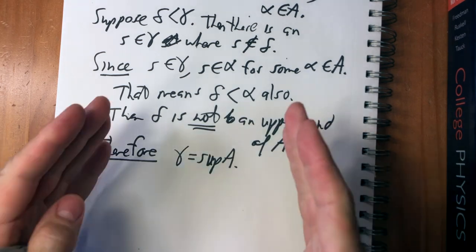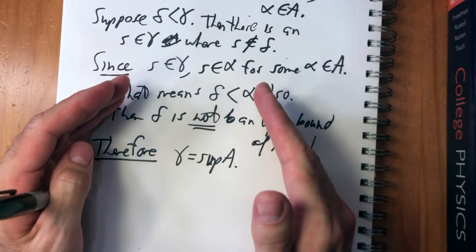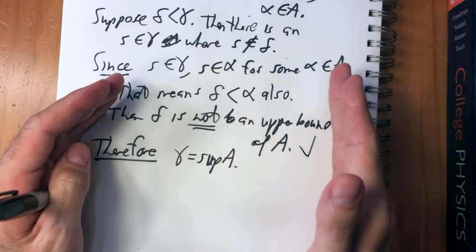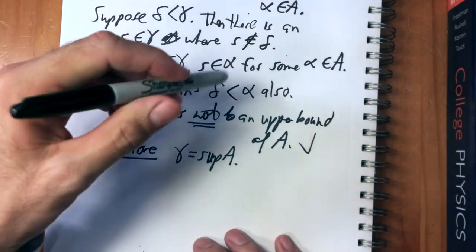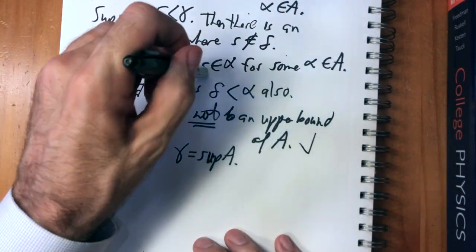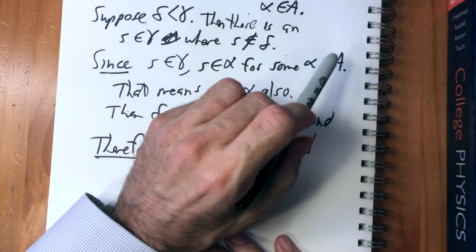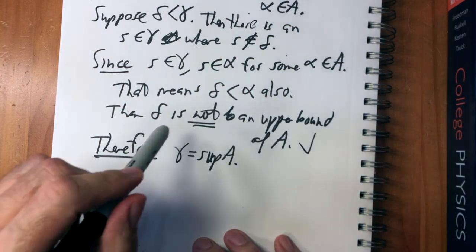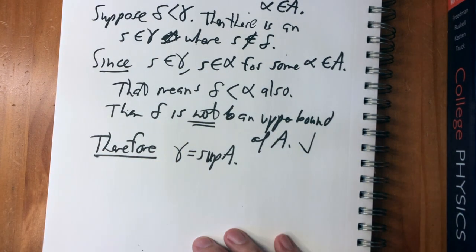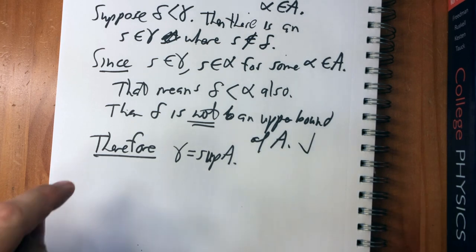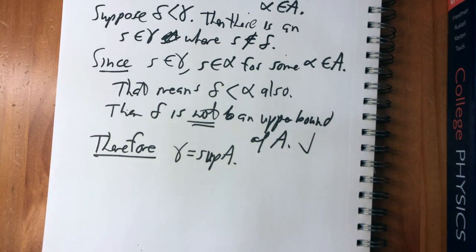Therefore, gamma equals the supremum of A. With this we just proved that this set has the least upper bound property: for any bounded set of elements of R, we can construct a least upper bound. So our system of cuts has the least upper bound property. Starting next video, we'll do step four — the field axioms — then the ordered field, then embed the rationals in the reals, and then we'll be done.